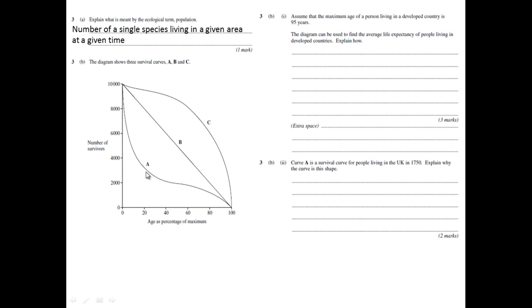If you look at the survival curves, if it is a developed country, then you would expect people to live to an old age and therefore you wouldn't expect people to be dying young. The only curve that represents that is C.